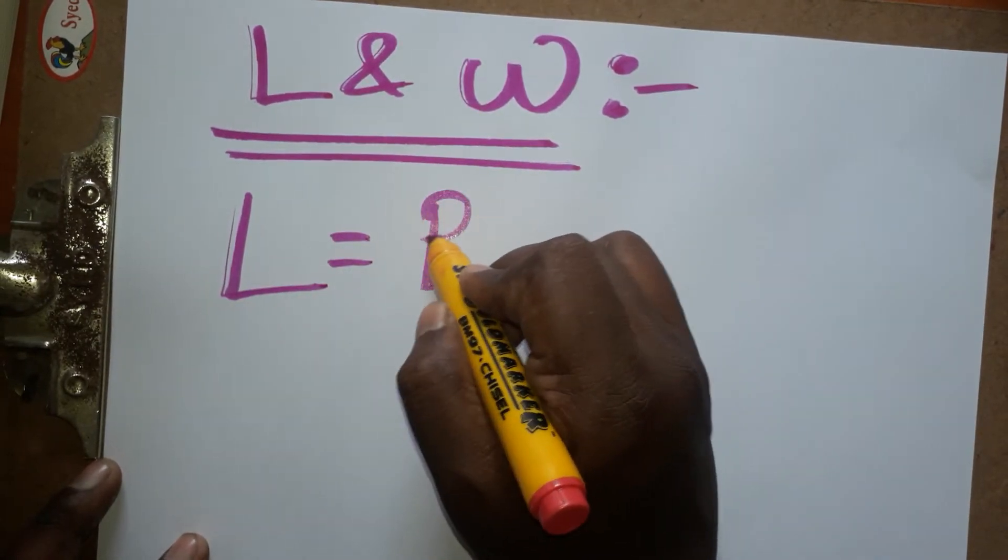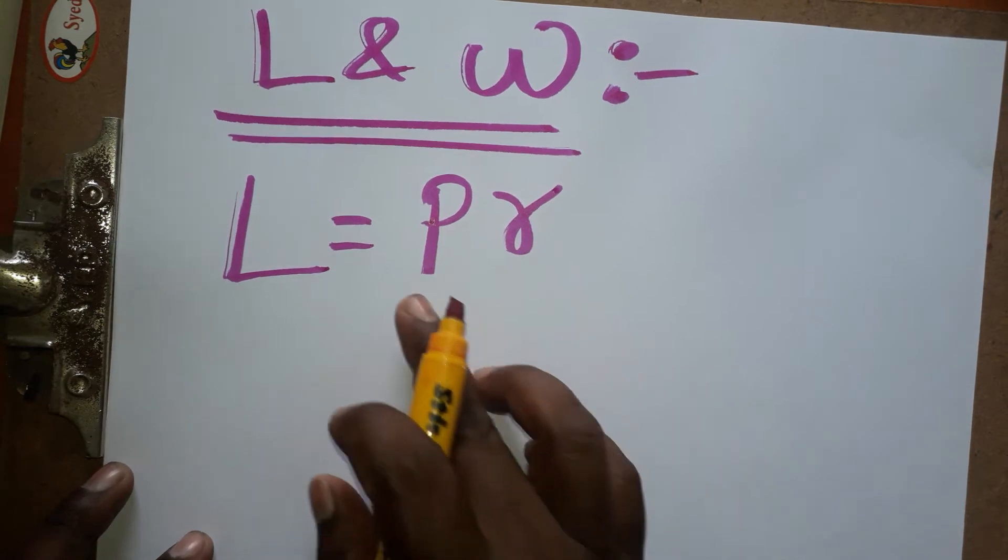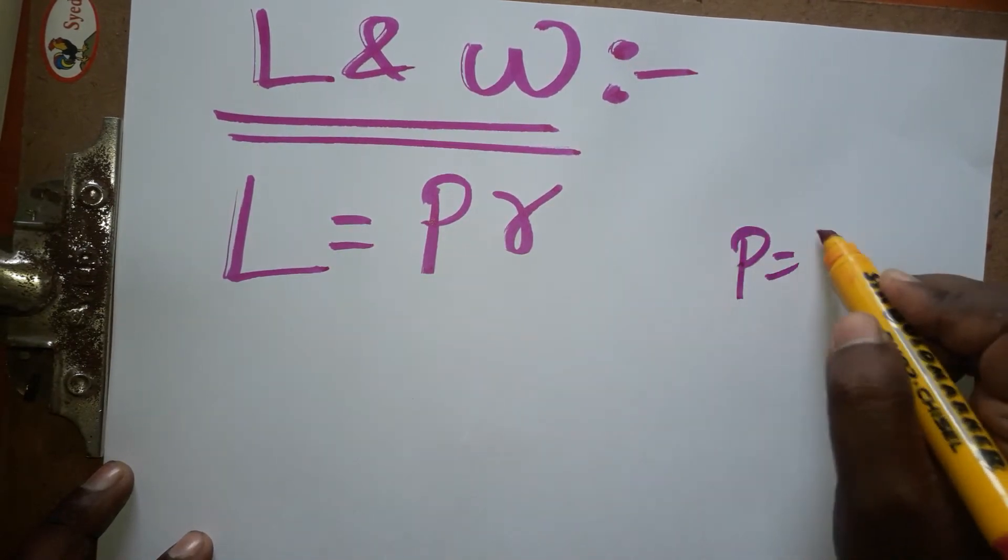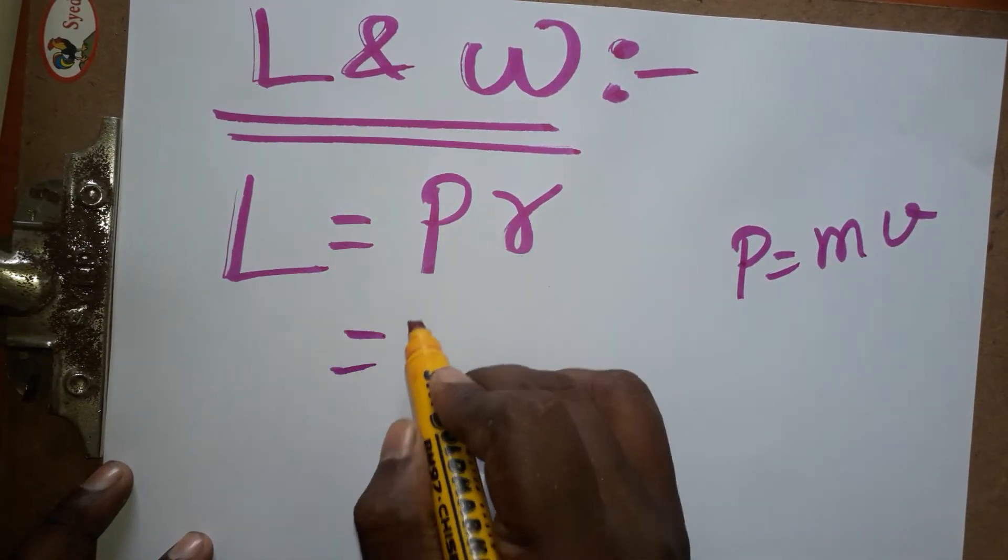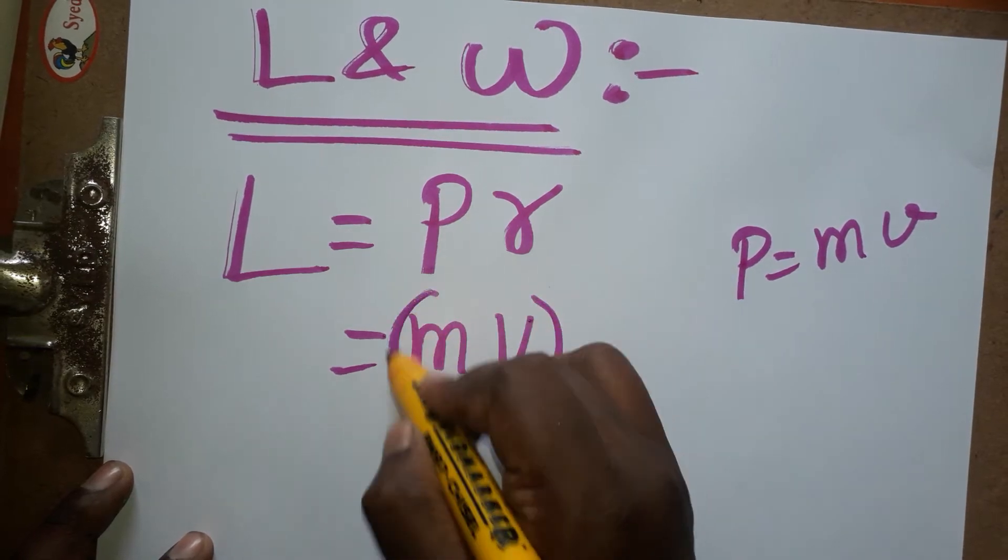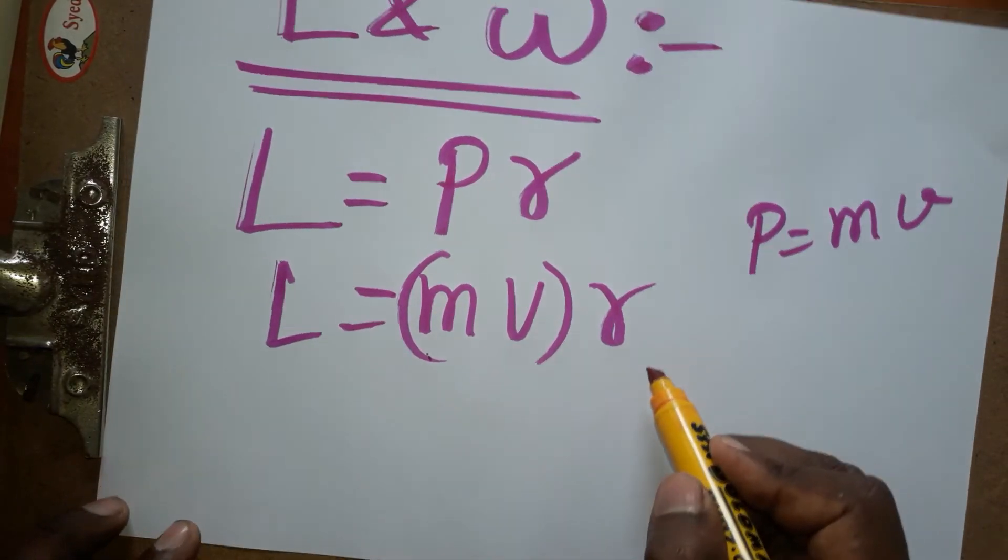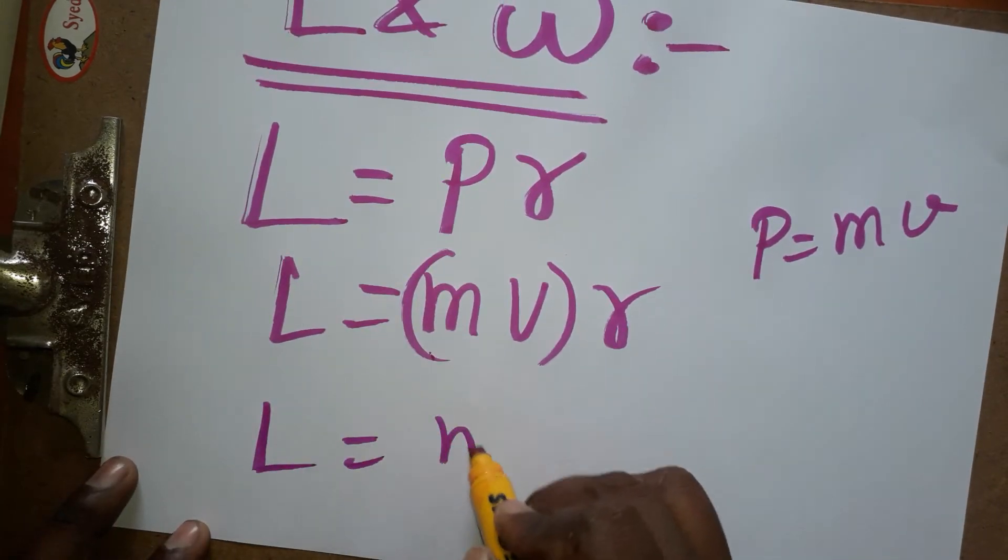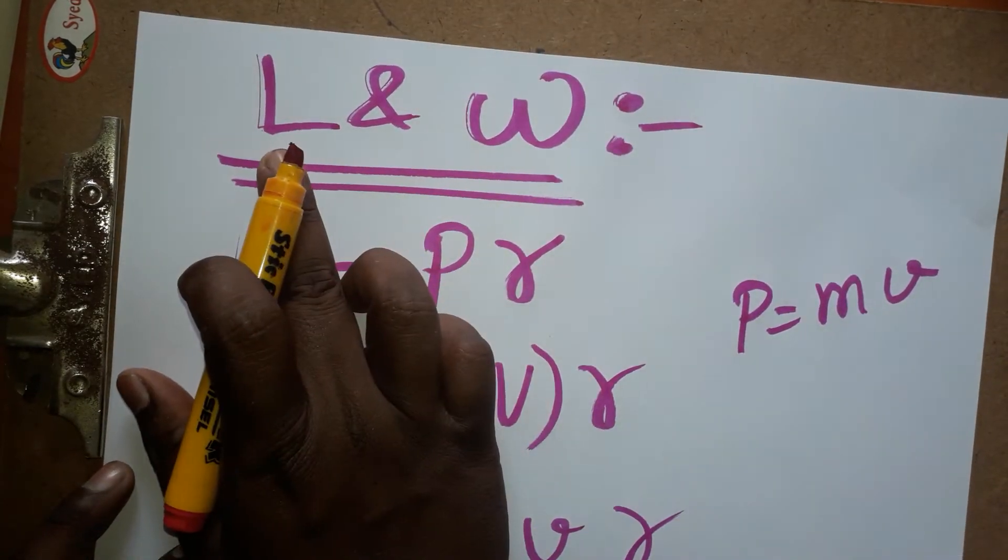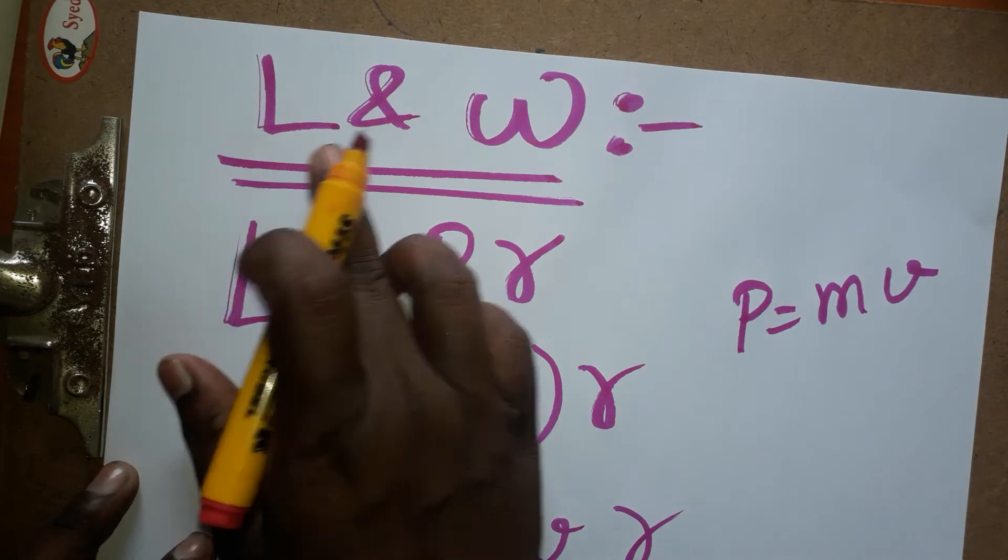First we will see angular momentum is equal to linear momentum times radius. So linear momentum is equal to the product of mass into velocity, so we can write m v times r. So L is equal to m v r. Angular momentum is equal to m v r.